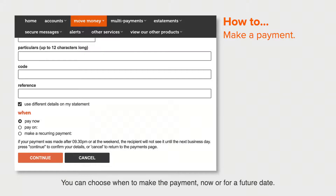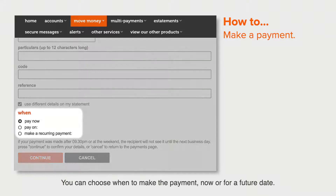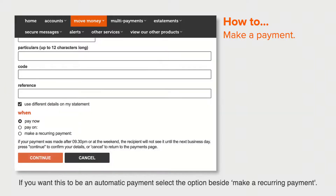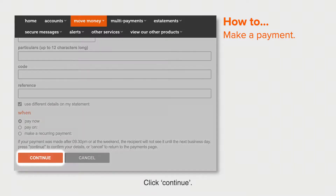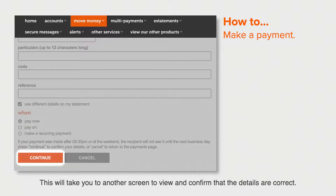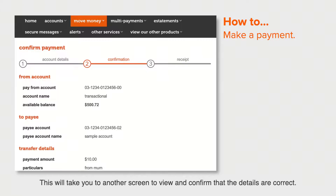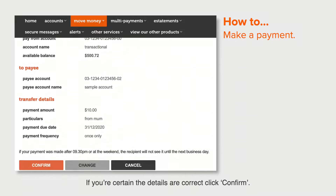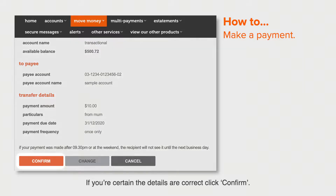If you want to see different details on your statement, tick the box beside use different details on my statement. You can choose when to make the payment — now or for a future date. If you want this to be an automatic payment, select the option beside make a recurring payment. Click Continue. This will take you to another screen to view and confirm that the details are correct. If you're certain the details are correct, click Confirm.